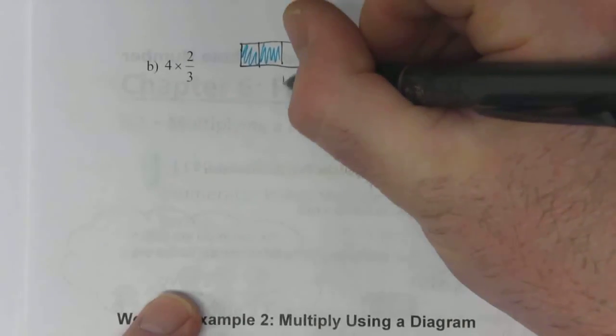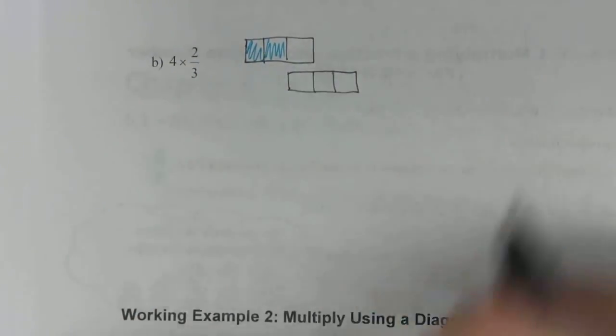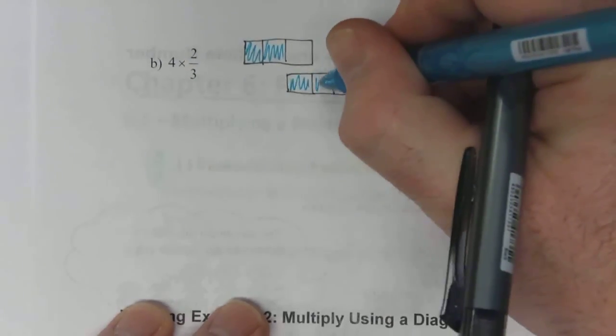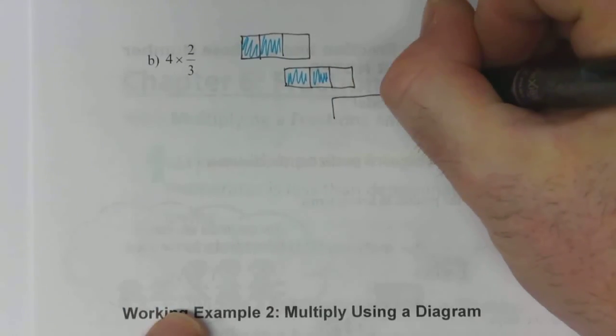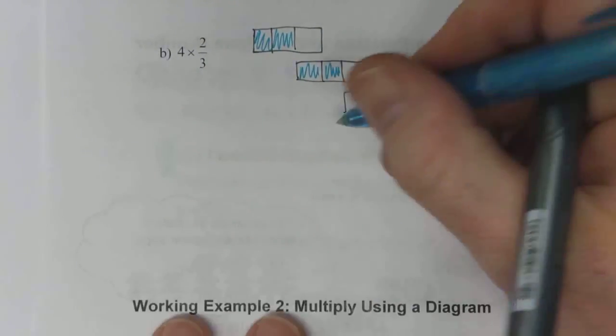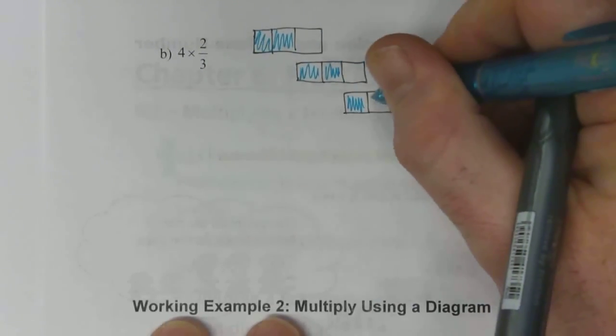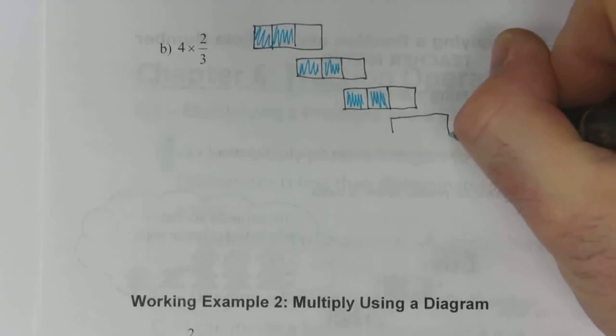That's one. This is the second one, 2/3 shaded. Third one. And then we need one more.